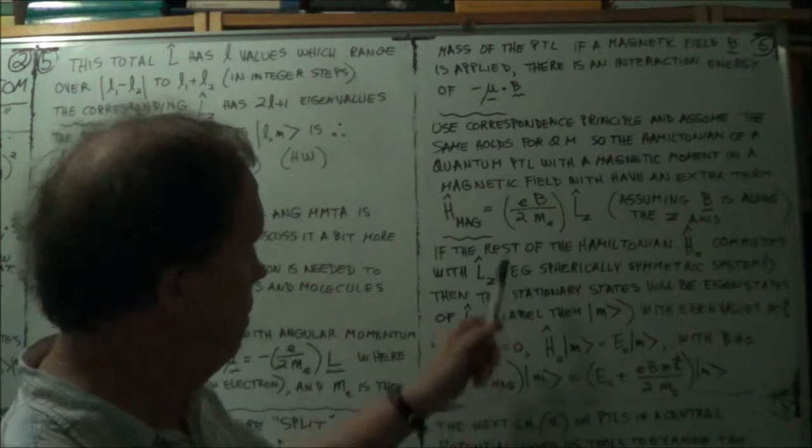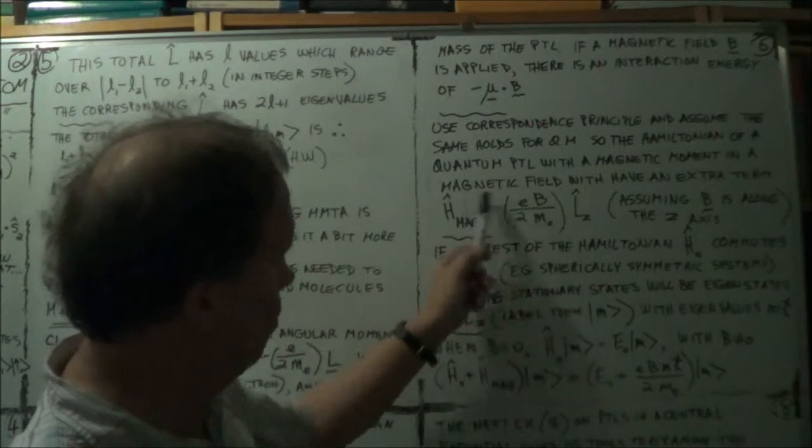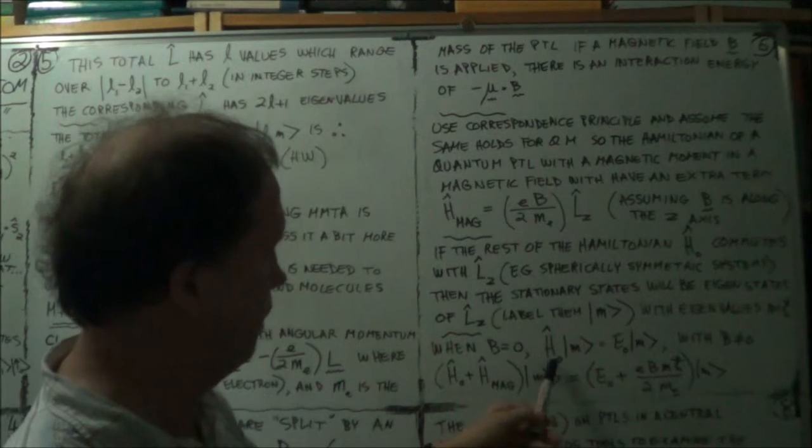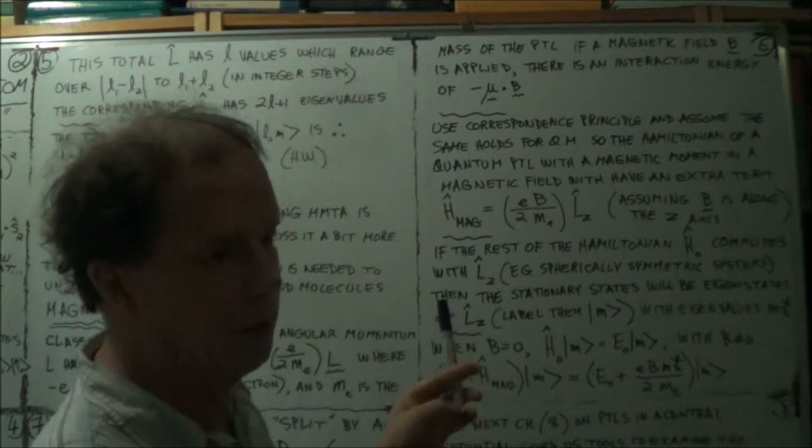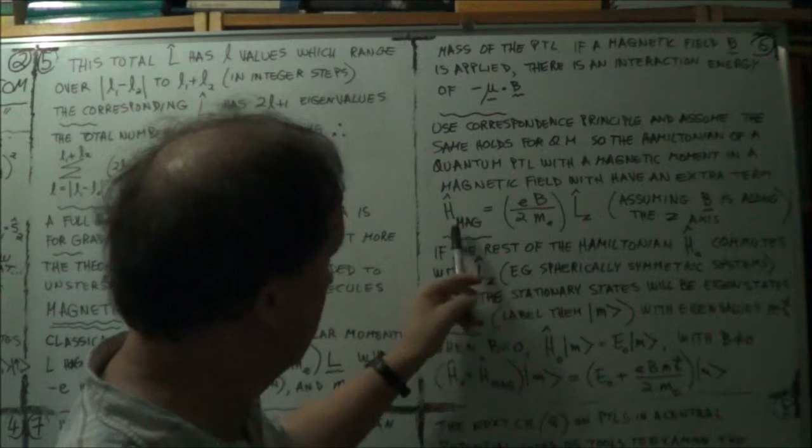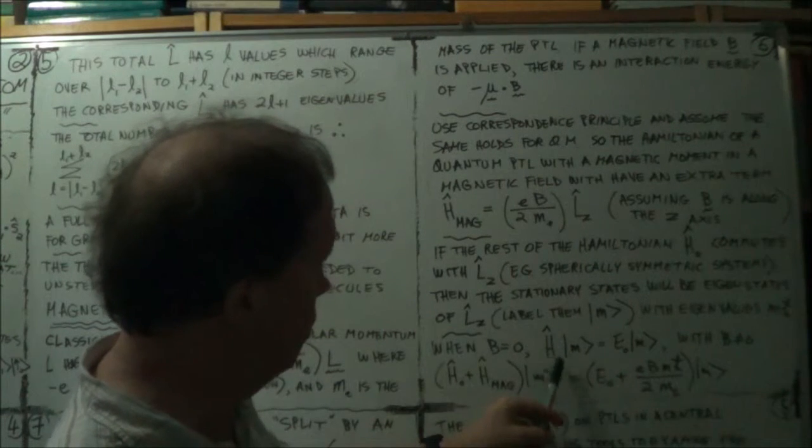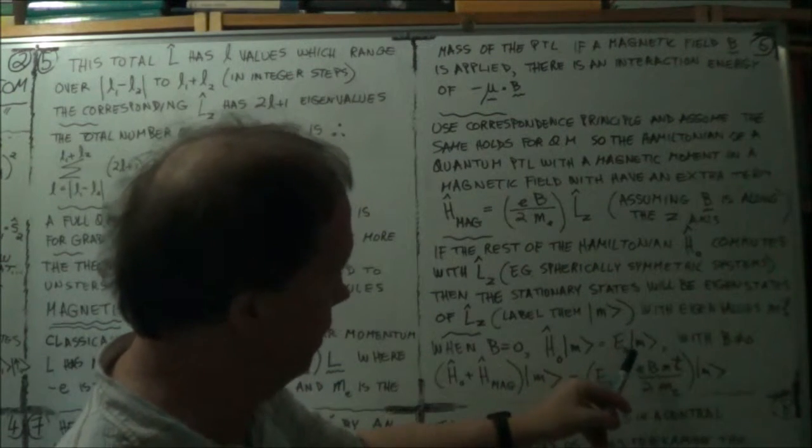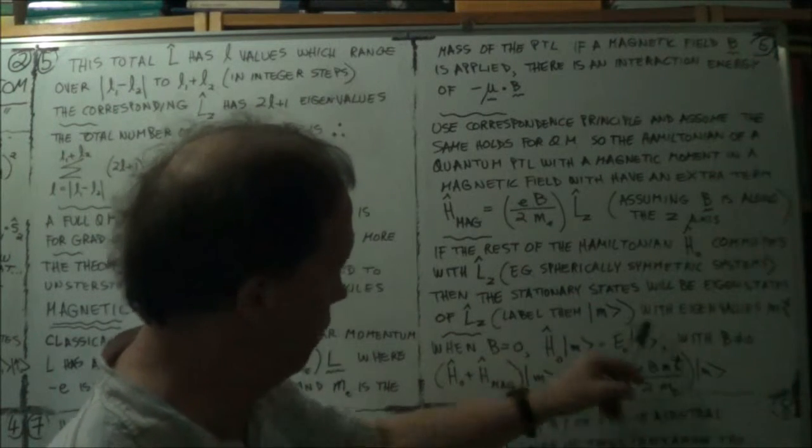Now, when B is zero, this term drops away. So, then your energy eigen-equation, in other words, your Hamiltonian equation. So, this is zero. So, you're just left with H_naught hat. There's E_naught. There's your eigenvalue for this eigen-equation.